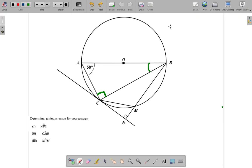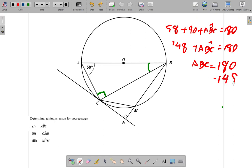So we can find out what this is. You have a total of 180 degrees inside the triangle. So 58 plus 90 plus ABC is 180. 90 and 58 is 148, so 148 plus ABC is 180. So angle ABC is 180 minus 148.